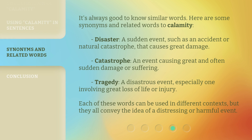It's always good to know similar words. Here are some synonyms and related words to calamity. Disaster: a sudden event, such as an accident or natural catastrophe, that causes great damage. Catastrophe: an event causing great and often sudden damage or suffering. Tragedy: a disastrous event, especially one involving great loss of life or injury. Each of these words can be used in different contexts, but they all convey the idea of a distressing or harmful event.